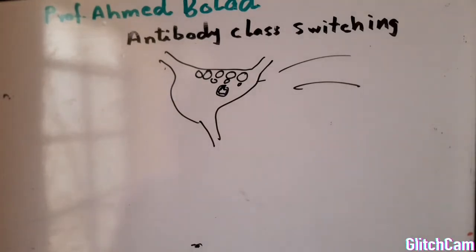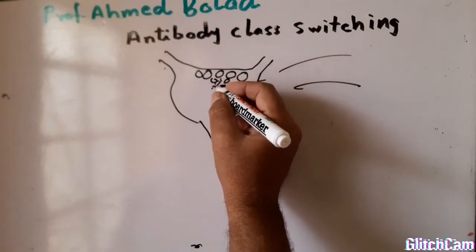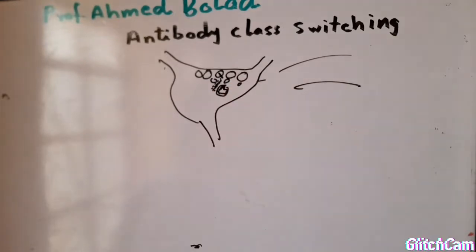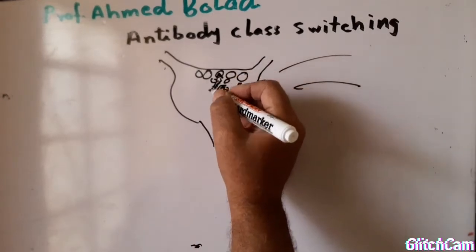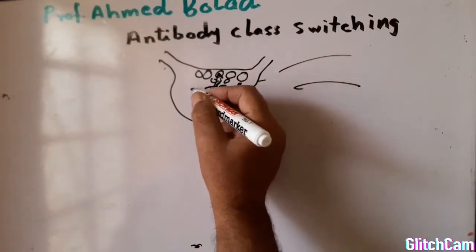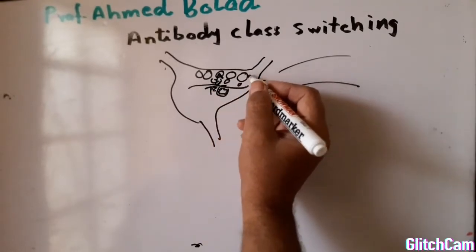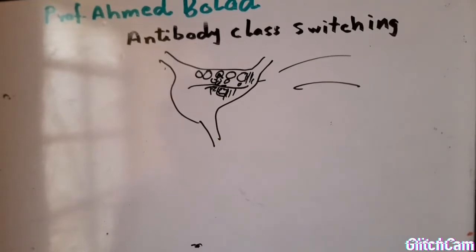The follicular dendritic cells trap the antigens and present them to B lymphocytes. The B lymphocytes interact with T lymphocytes at the border between the cortical and paracortical area of the lymph node.